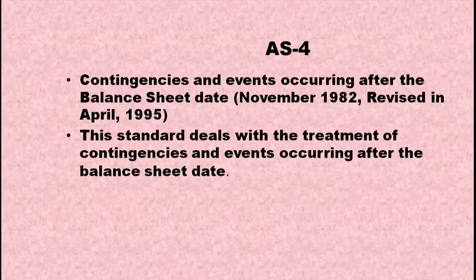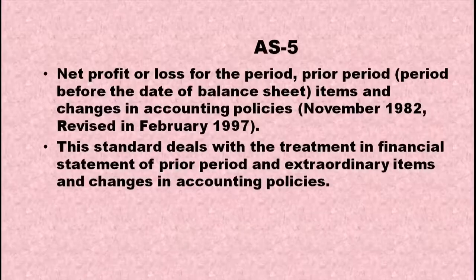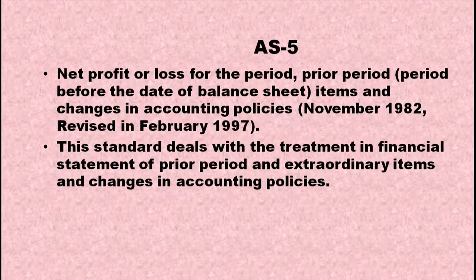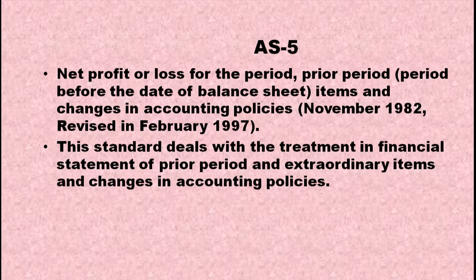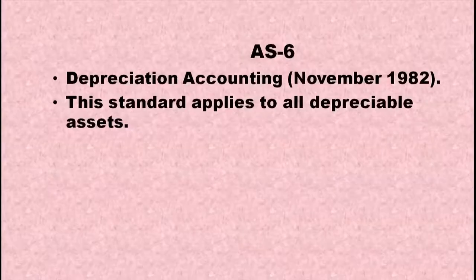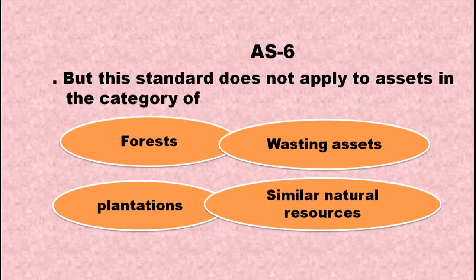AS4 deals with contingencies and events occurring after the balance sheet date. AS5 covers net profit or loss for the period, prior period items, and changes in accounting policies — it deals with the treatment in financial statements of prior period and extraordinary items and changes in accounting policies. AS6 does not apply to assets in the category of forests, wasting assets, plantations, and similar natural resources.